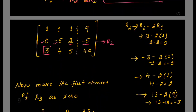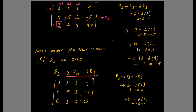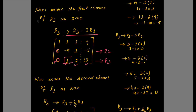Next, make the first element of row 3 equal to 0. Since R1 has all ones, multiplying R1 by 3 gives 3. Performing R3 minus 3×R1: 3 minus 3 = 0; 4 minus 3 = 1; 5 minus 3 = 2; 40 minus 27 = 13. We have now successfully made both elements below the first diagonal position zero. Only one element remains to be zeroed.